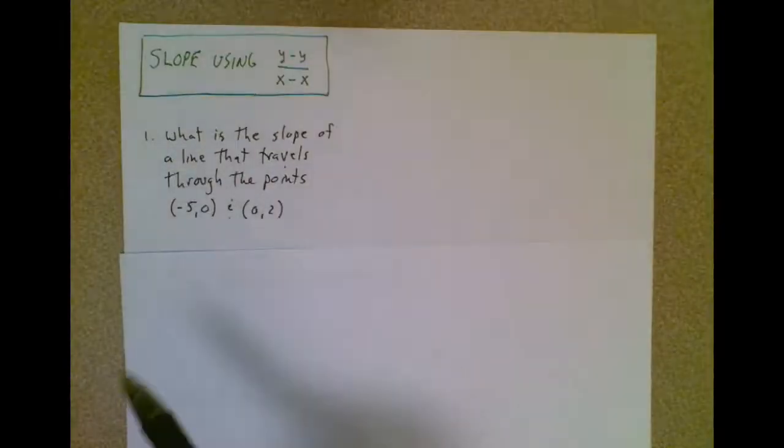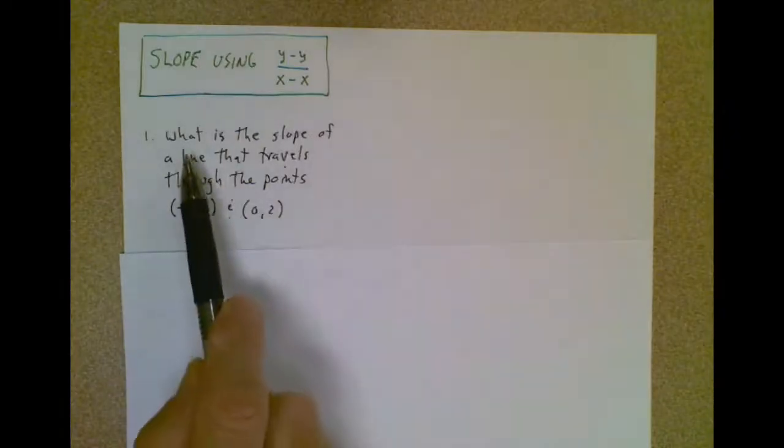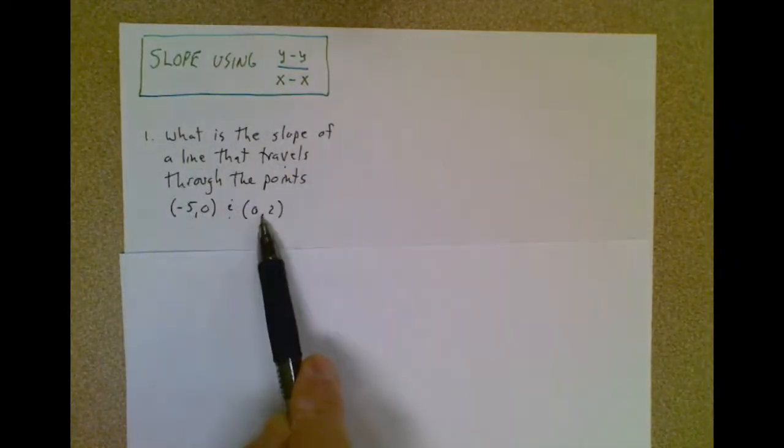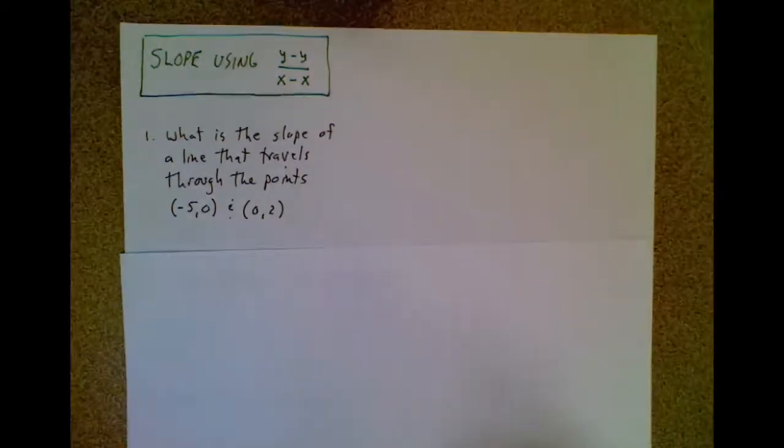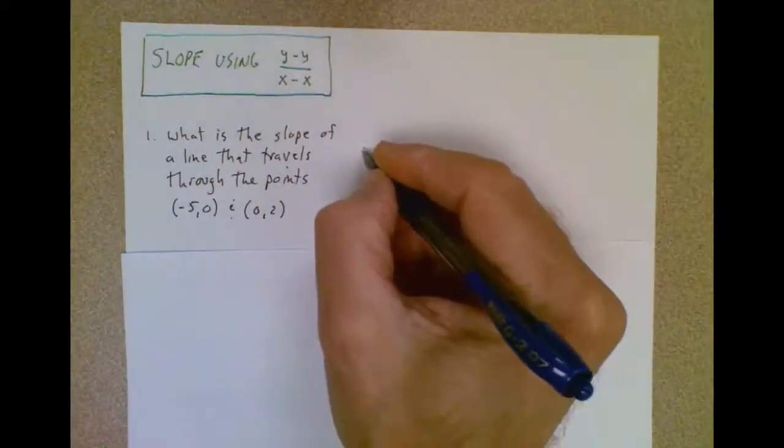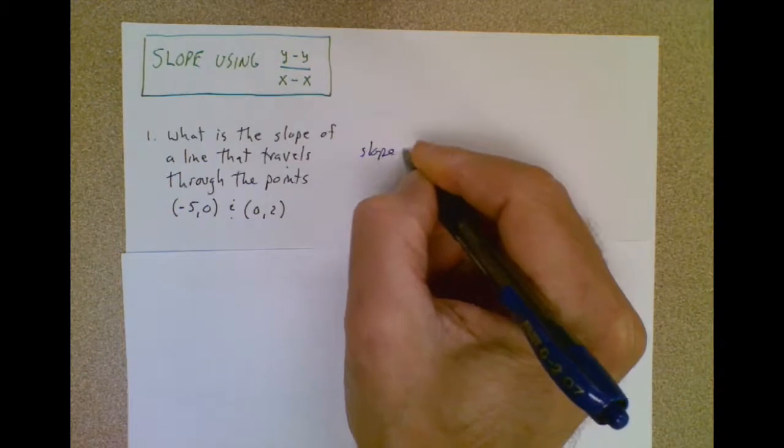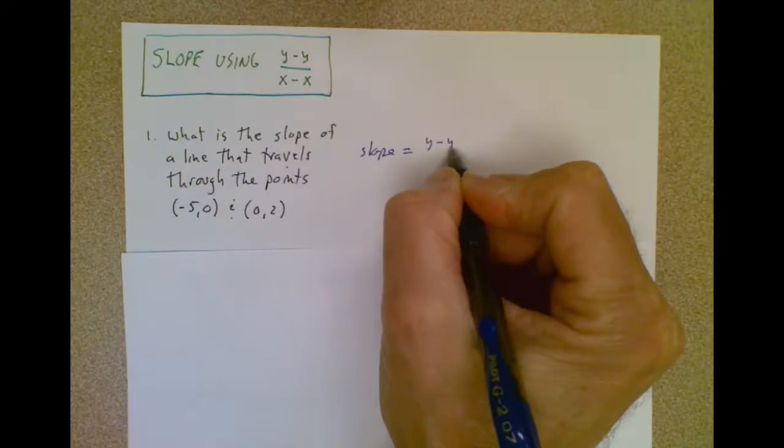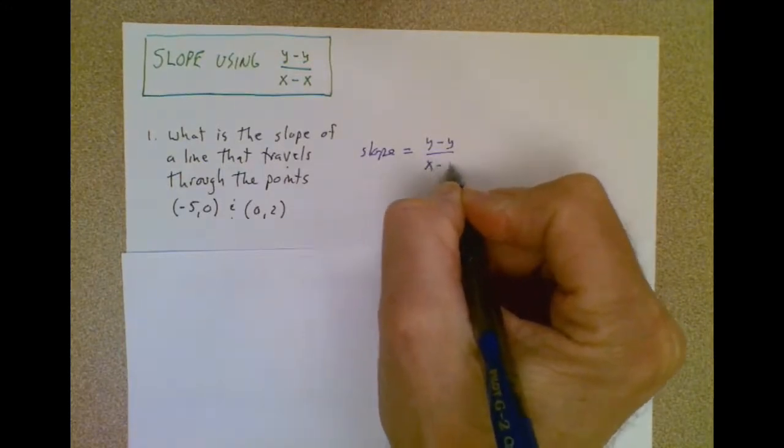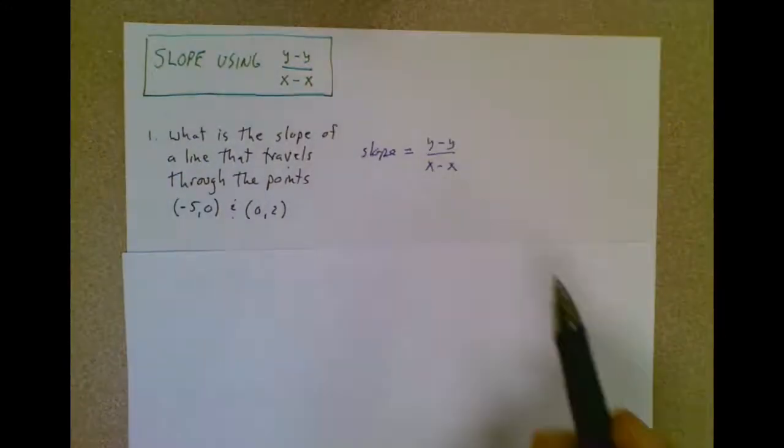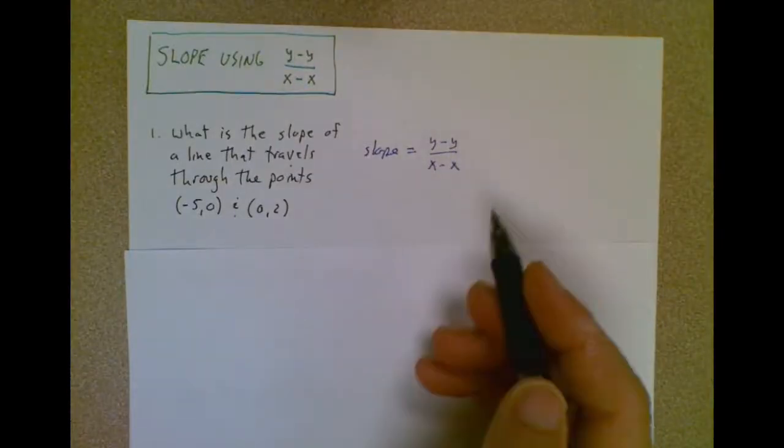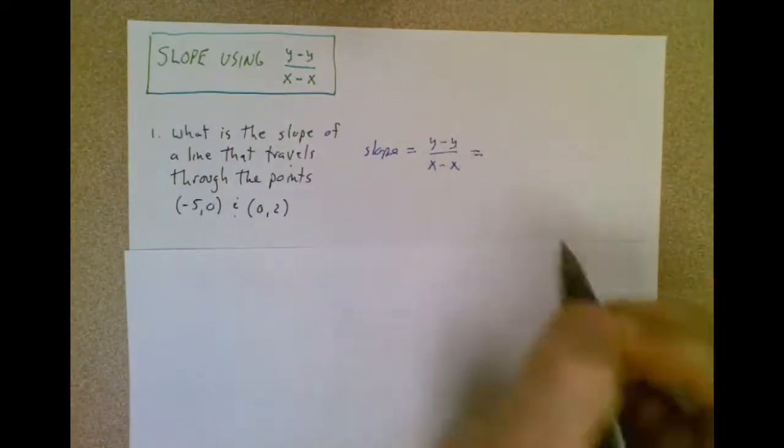In this first example, you see we definitely don't have a graph. It says, what is the slope of a line that travels through these two points? Well, I don't have a graph, so what I can do, and it's the exact same advice I gave when I did the rise over run video, the very first thing you should do is write down the formula you're going to use. So instead of writing rise over run, you write y minus y over x minus x. There's no reason to skip that step.